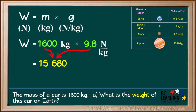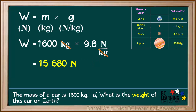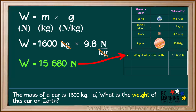1,600 times 9.8 comes out to 15,680. The unit kilogram is in the numerator and the denominator, so it can be cancelled out, leaving us with only newtons as a unit. The weight of the car on Earth is 15,680 newtons.